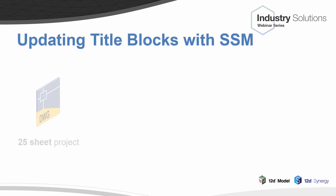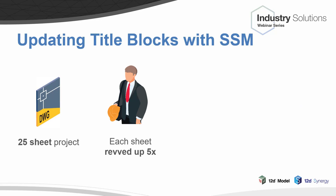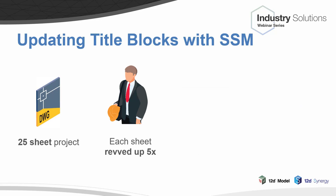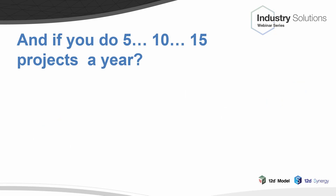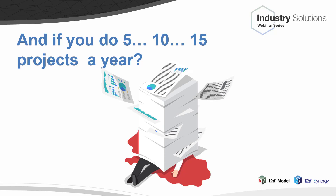Let's say your project has 25 sheets, and throughout the life of the project each sheet gets revised up five times. Every time it revs up, five title block changes are required - this is pretty standard. Very quickly, you're looking at 625 title blocks that need to be updated, and this can take you hours. If you do 5, 10, 15, or 25 projects a year, you could be talking days of mind-numbing data entry - just grinding out title block after title block after title block.